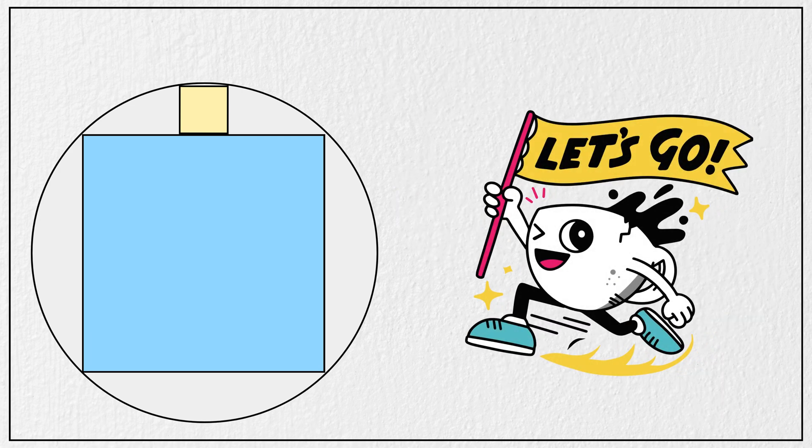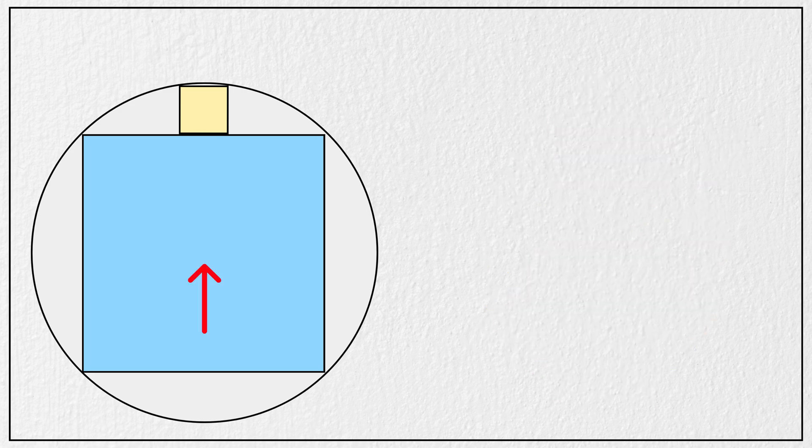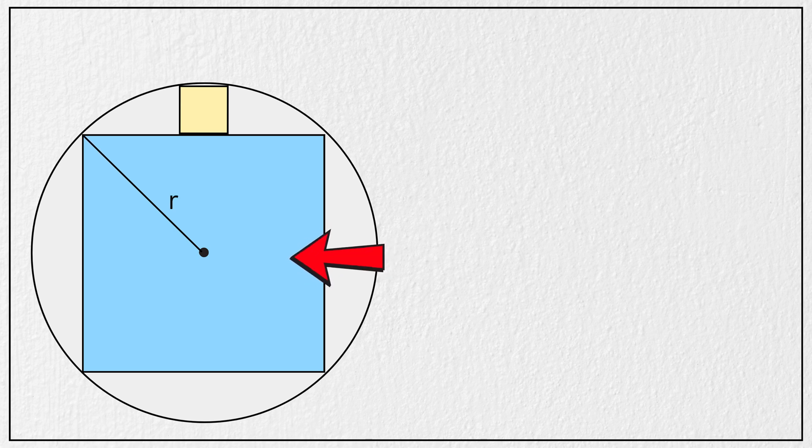Alright, let us solve it together, but before we begin, let us mark the center of this circle and define the radius of the circle as r. Now let us focus on this large blue square. Since it is inscribed in a circle, we will draw a diameter of the circle like this, connecting two opposite corners of the square. This diameter will be twice the radius of the circle.